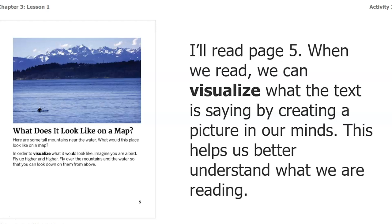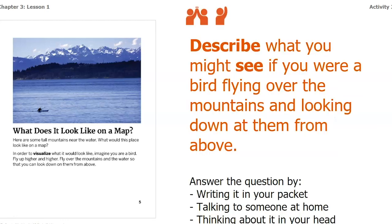What does it look like on a map? Here are some tall mountains near the water. What would this place look like on a map? In order to visualize it, imagine you are a bird. Fly up higher and higher, over the mountains and the water, so that you can look down on them from above. Take a second to describe what you might see if you were a bird flying over the mountains. You can write it in your packet, talk to somebody at home, or think about it in your head. Pause the video and answer this question.